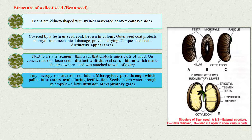Micropyle is the pore through which the pollen tube enters the ovule during fertilization. Seeds absorb water through this micropyle. It also allows diffusion of respiratory gases during seed germination.